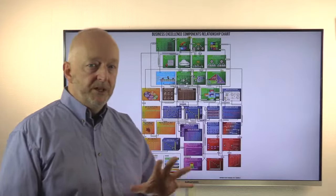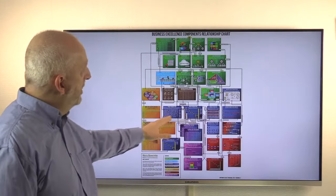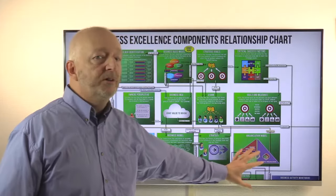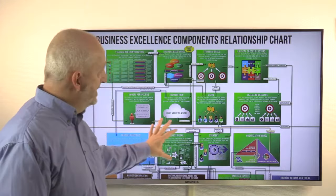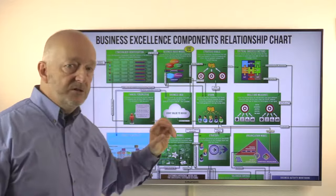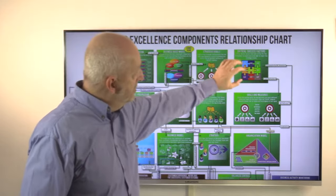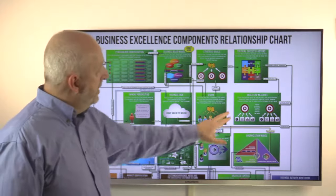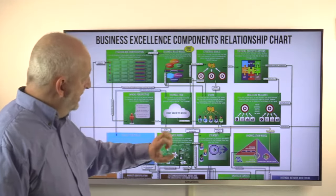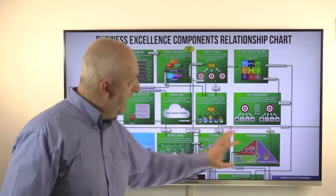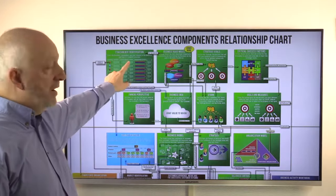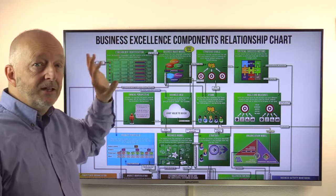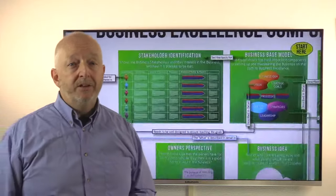In the previous videos we've been talking about these green components. We talked about the business idea, the vision, the strategy goals, we've broken that down into critical success factors, goals and measures, and we talked about strategy as well. We will come back to the other green ones, but now for this video we'll be talking about the stakeholders that we have in a business.